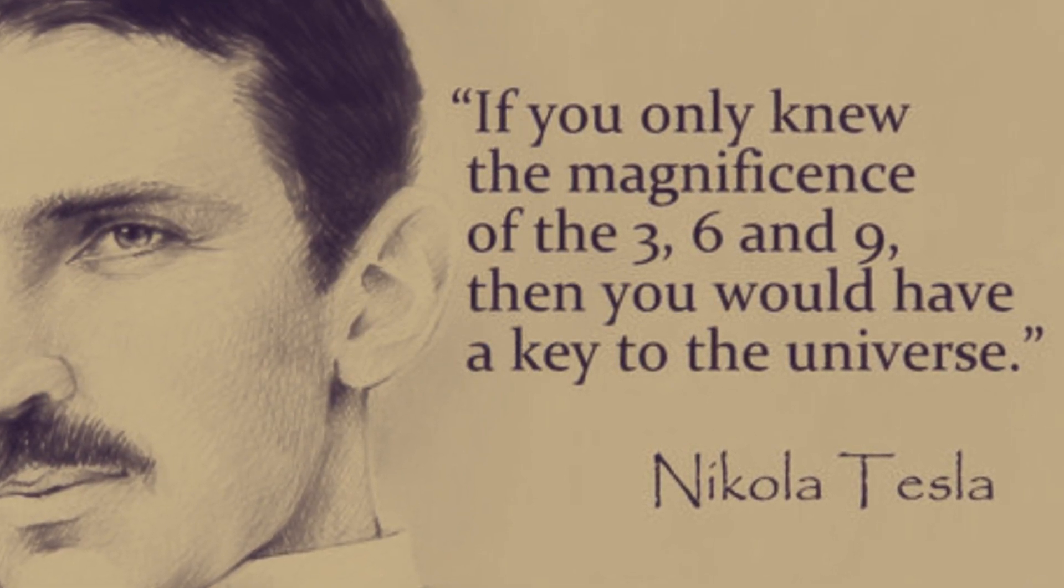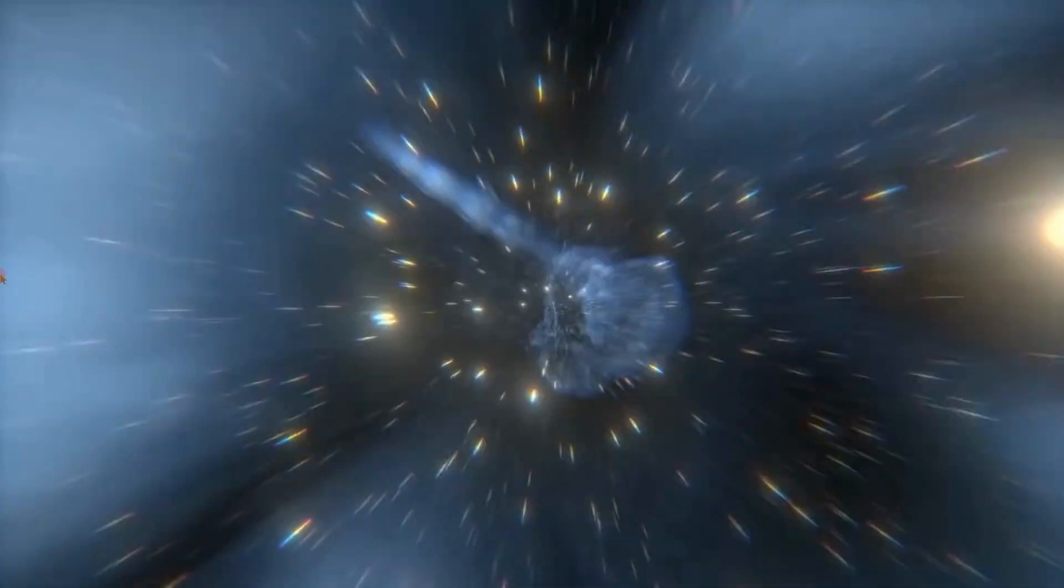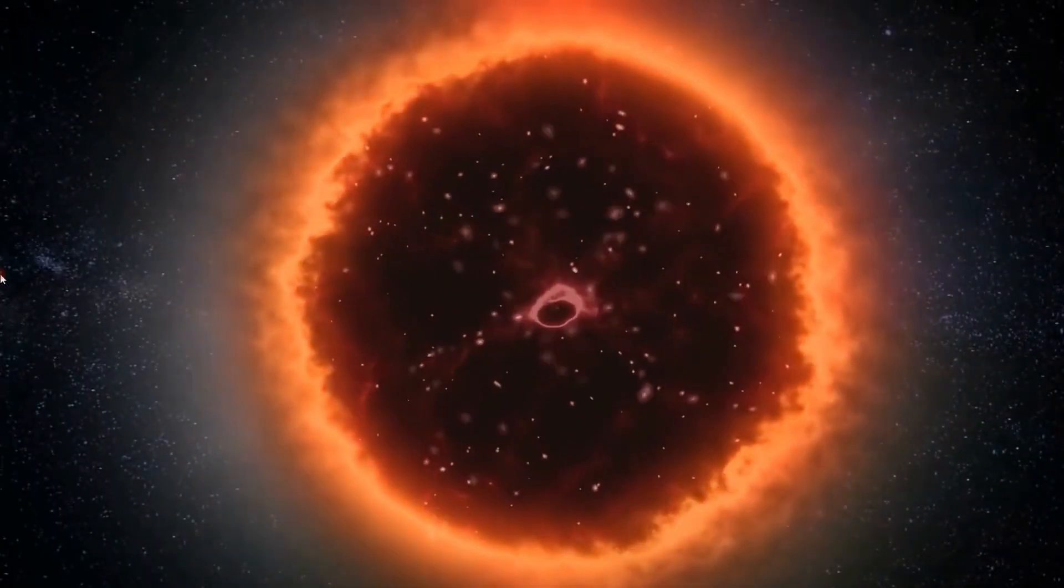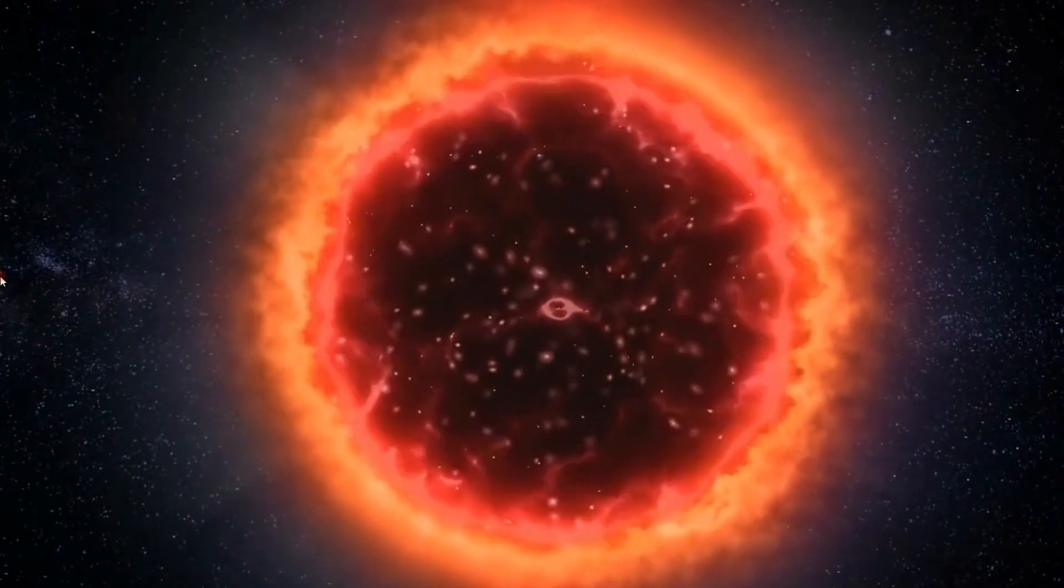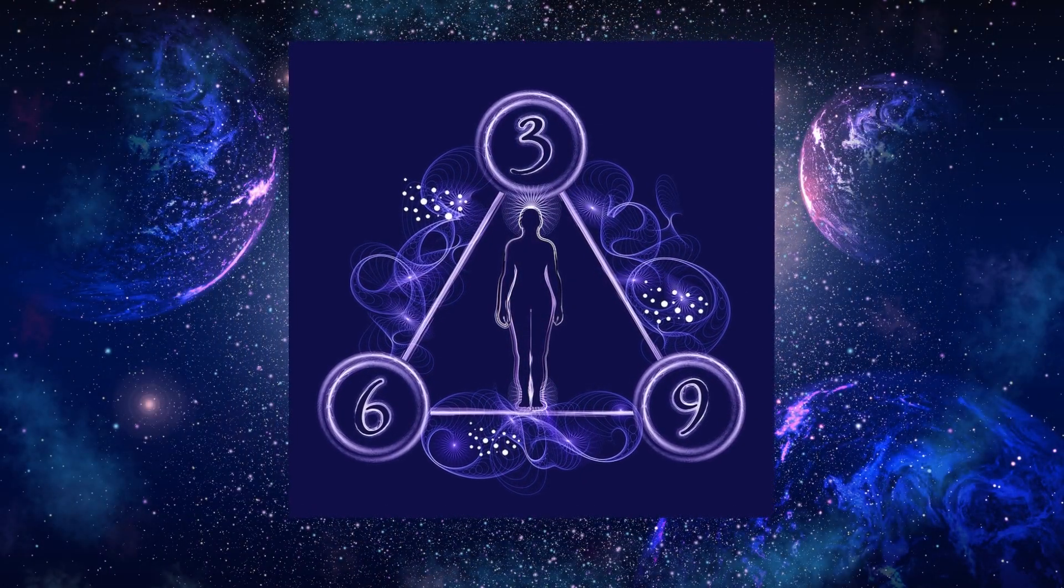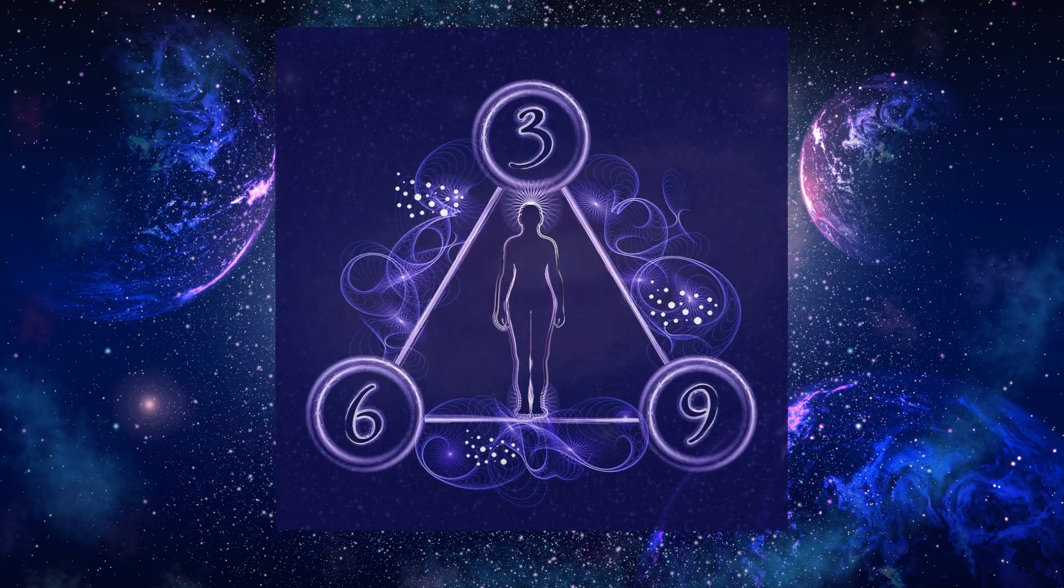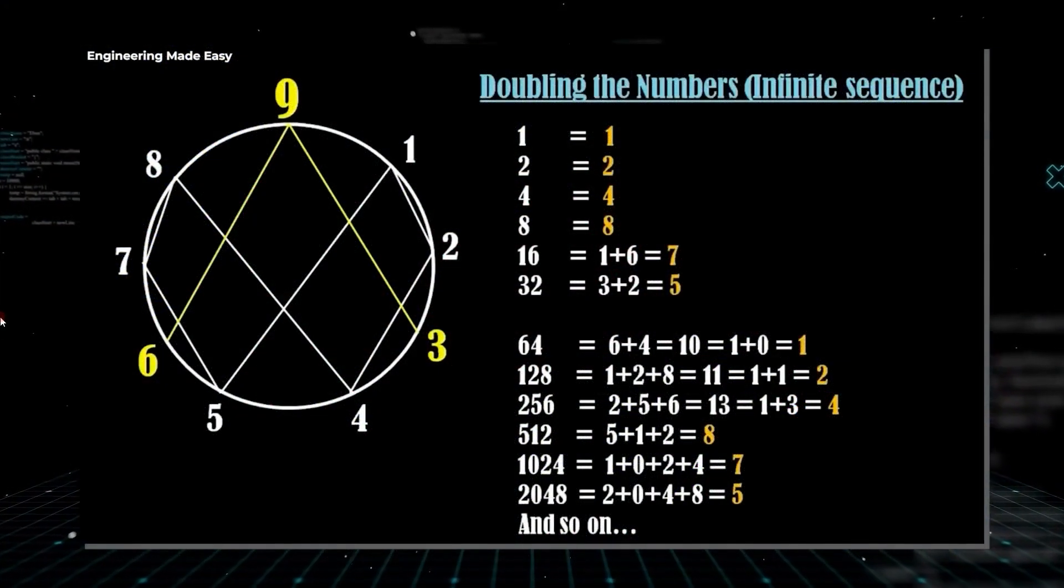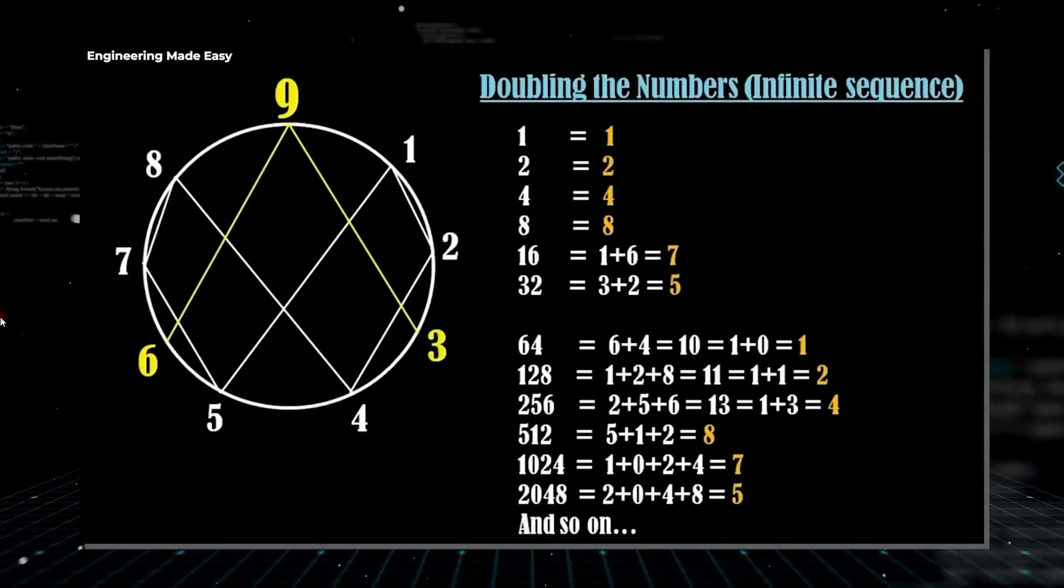For Nikola Tesla, 369 serve as focal points that represent higher dimensions, while the rest of the single-digit numbers belong to our base three-dimensional reality. Why did Tesla do things in threes? Tesla did everything in groups of three due to his obsession with vortex patterns of 369. His belief in the sacredness of the number three led him to do most things in threes.